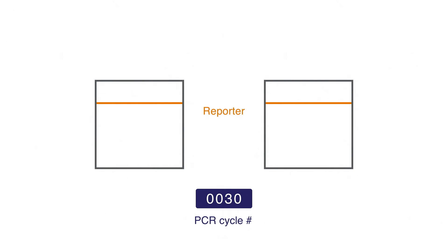As a result, the precision of our data goes way up. By the way, the resulting value is called the RN, which stands for Normalized Reporter.